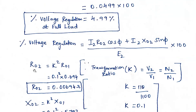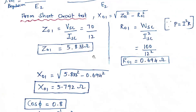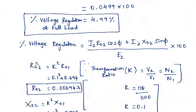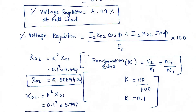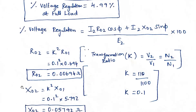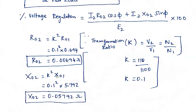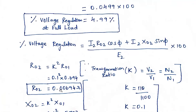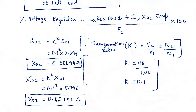To convert primary values to secondary, we multiply by k². R₀₂ equals k² × R₀₁ = 0.1² × 0.694 = 0.00694 ohms. Similarly, X₀₂ equals k² × X₀₁ = 0.1² × 5.792 = 0.05792 ohms.